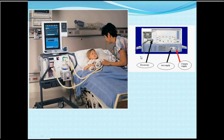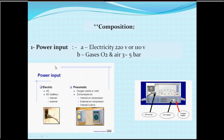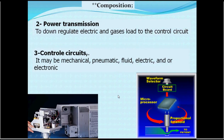These are the inputs for the ventilator: it runs on electricity and is supplied with air and oxygen in order to deliver pressure to the patient. The composition includes a power socket for electricity, and two other sockets with different colors — one for oxygen and one for air. The electricity and air are supplied at high voltage or high pressure, and these are down-regulated to match the requirements of the control circuits, which may be electric, electronic, pneumatic, or fluid-based.